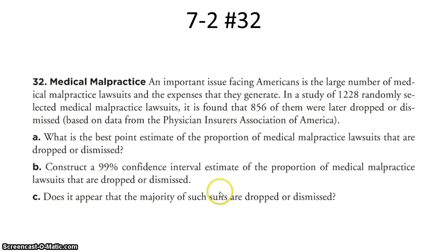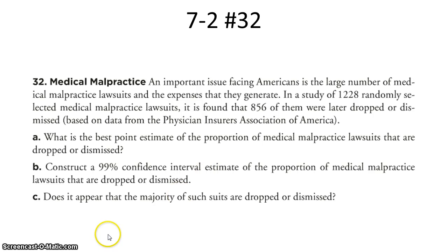For Part C, they ask: does it appear that the majority of such suits are dropped or dismissed — meaning, is our estimate truly greater than 50%? Since both the lower and upper bounds are above what would be considered a majority (greater than 50%), we can say with about 99% confidence that yes, the majority of such suits are dropped or dismissed. That concludes the demonstration of how we calculate a confidence interval estimate for one proportion using the standard normal distribution.